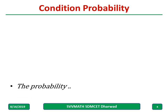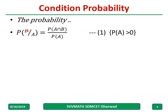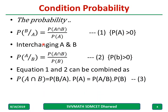Conditional probability: the probability of B given A, where A has already occurred, is given by the probability of A and B divided by the probability of A, but the probability of A must be greater than zero. Similarly, interchanging A and B, the probability of A given B has already occurred equals the probability of A and B divided by the probability of B, and again the probability of B must be greater than zero.